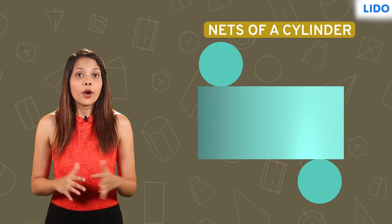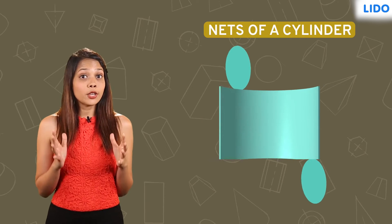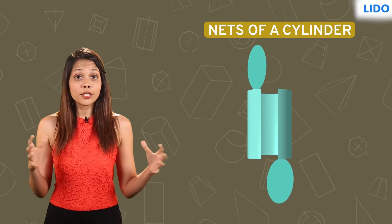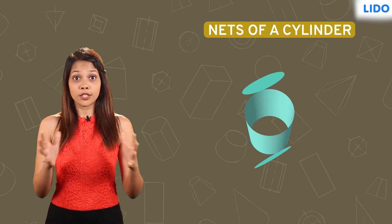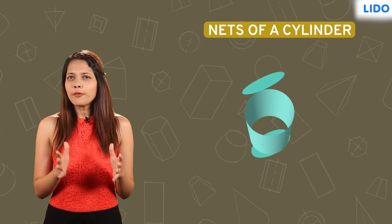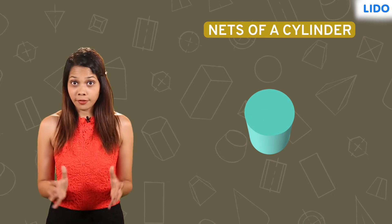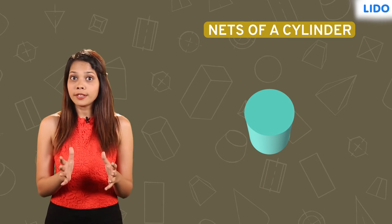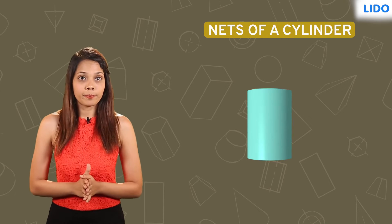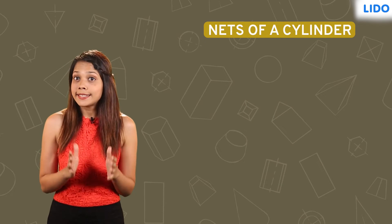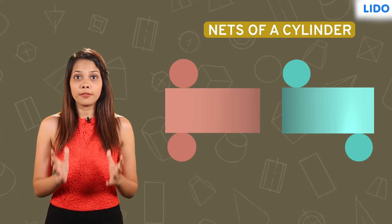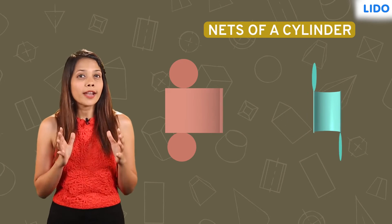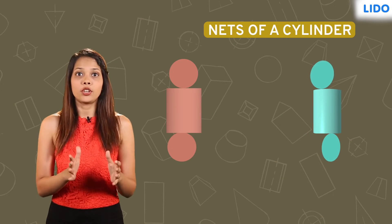But this time we'll fold it differently. Roll the rectangular face such that its two ends meet each other. Doing this gives us a tube that is open on both ends. Let us now fold the circular faces on the open ends of this tube to complete the cylinder.